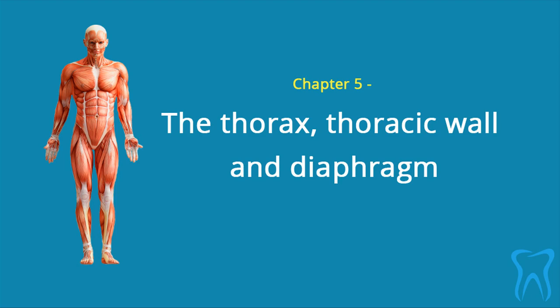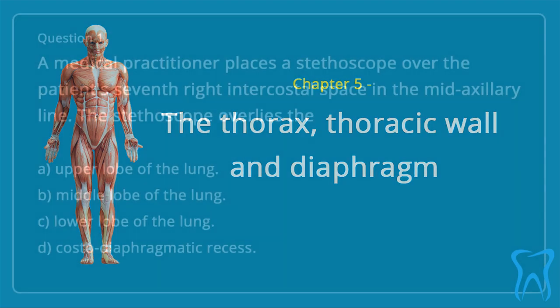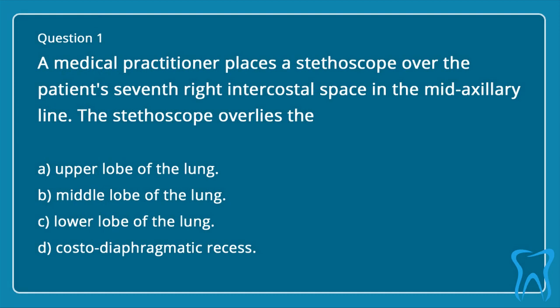Chapter 5: The Thorax, Thoracic Wall, and Diaphragm. Question 1: A medical practitioner places a stethoscope over the patient's 7th right intercostal space in the mid-axillary line.